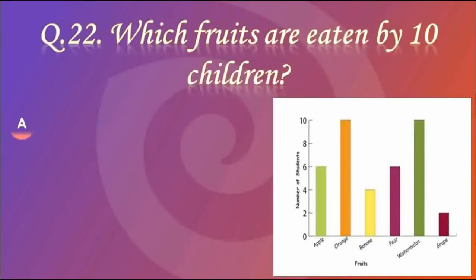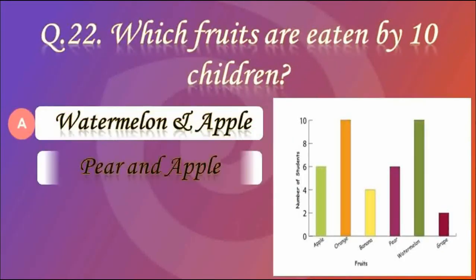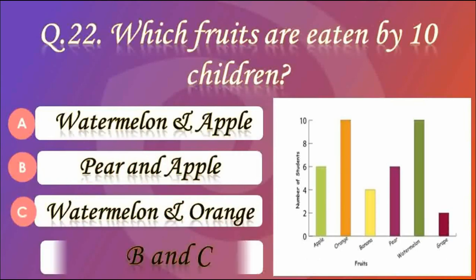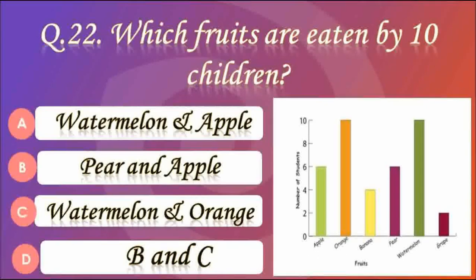Question number 22. Which fruits are eaten by 10 children? Option A — Watermelon and apple. Option B — Pear and apple. Option C — Watermelon and orange. Option D — Both B and C. Answer C — Watermelon and orange. Watermelon and orange are eaten by 10 children; it is the highest number.